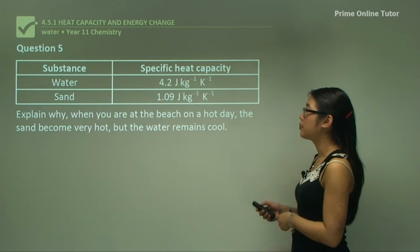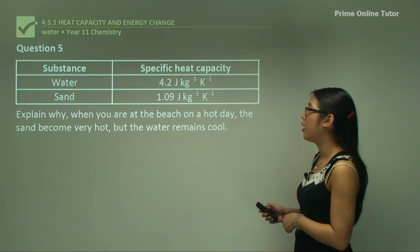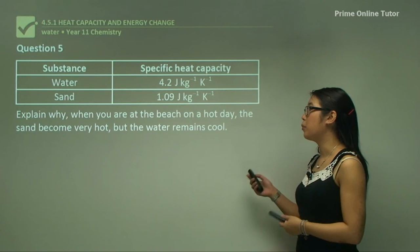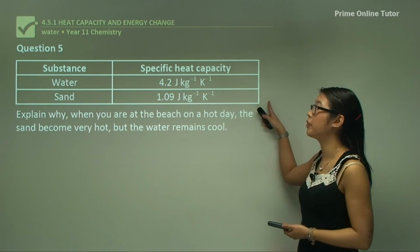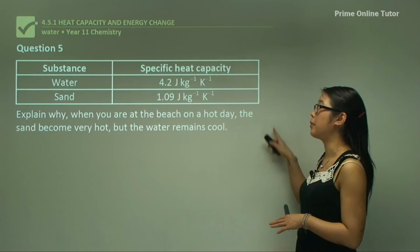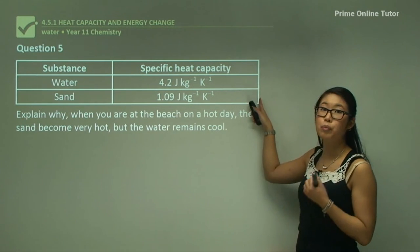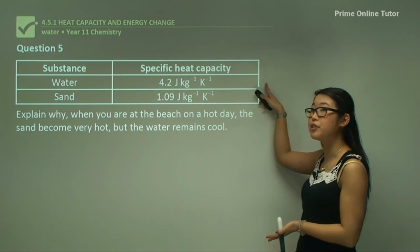Question five: explain why when you're at the beach on a hot day the sand becomes very hot but the water remains cool. They give you the table of specific heat capacities of water and sand. Water is 4.2 and sand is 1.09.